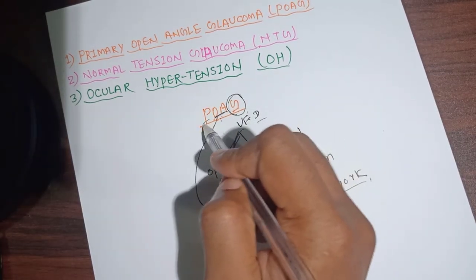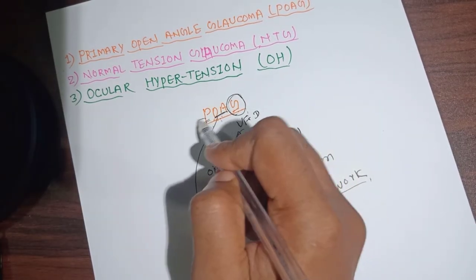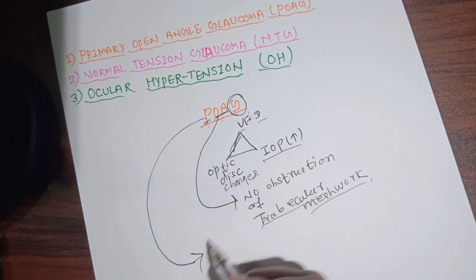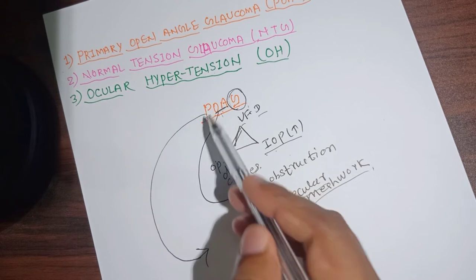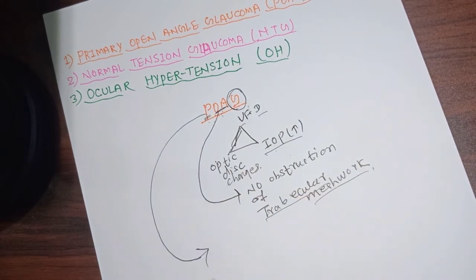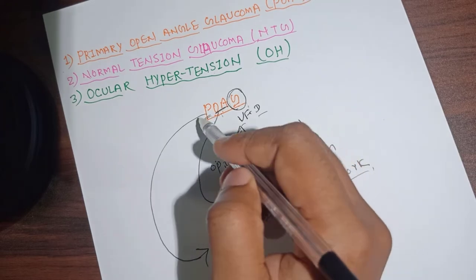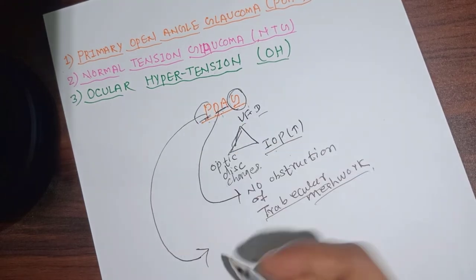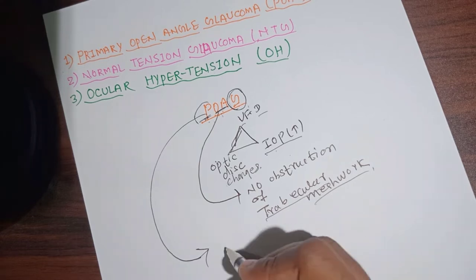For the P — primary — it means there is no ocular or systemic condition that favors the rise in intraocular pressure. There is no systemic or ocular defect that leads to the increase in intraocular pressure.